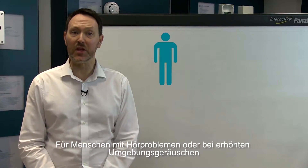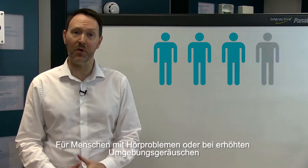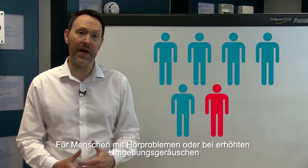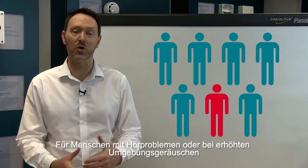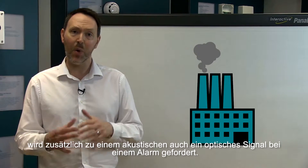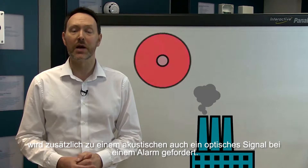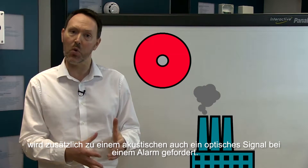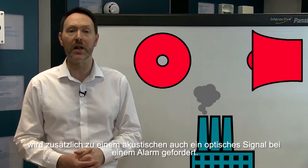Hi and welcome to this video about our EN54 part 23 compliant visual alarm devices or VADs. One in seven people in the UK are deaf or hard of hearing, and they, as well as those who work in noisy environments such as factories, require a visual signal as well as an audio warning in the event of an alarm.